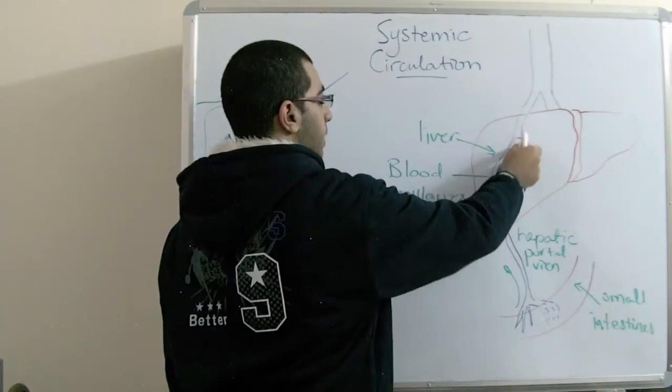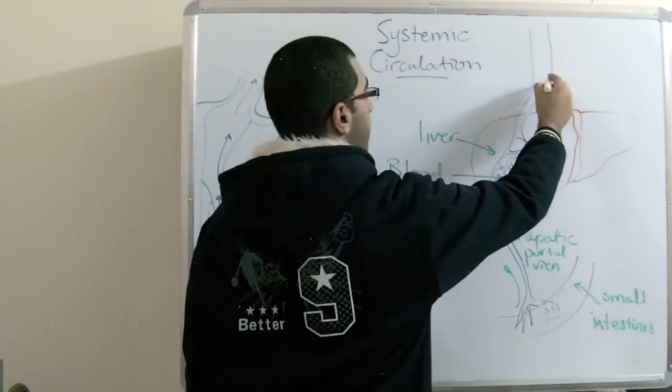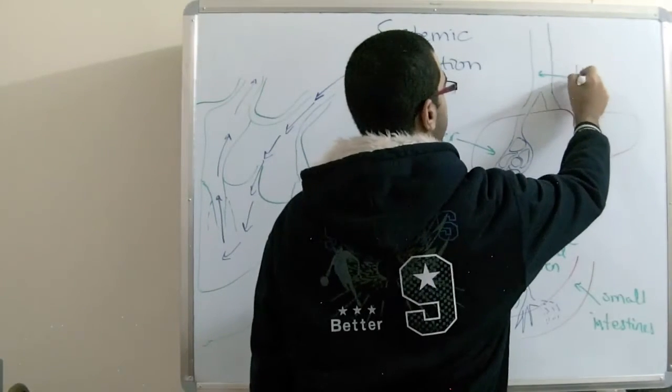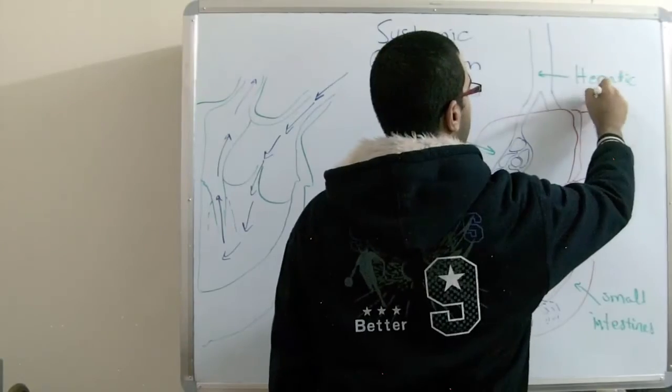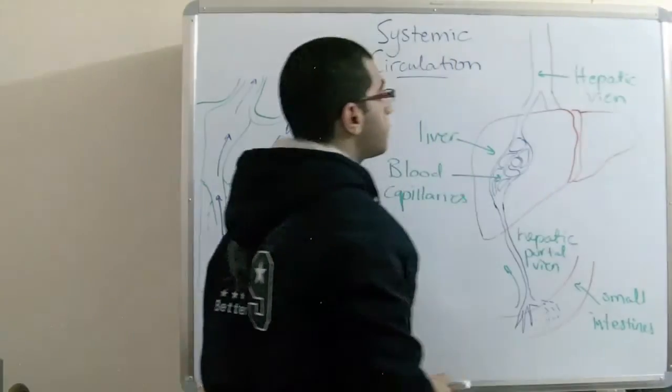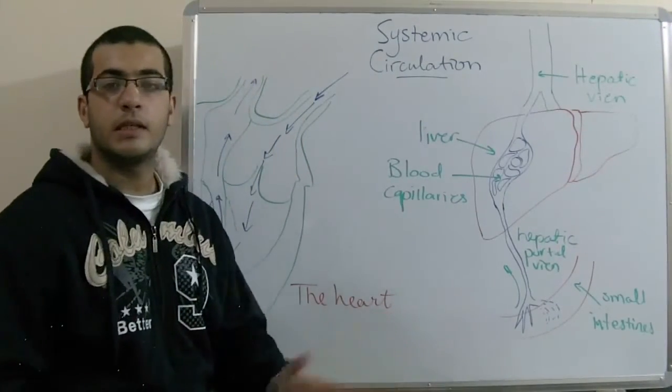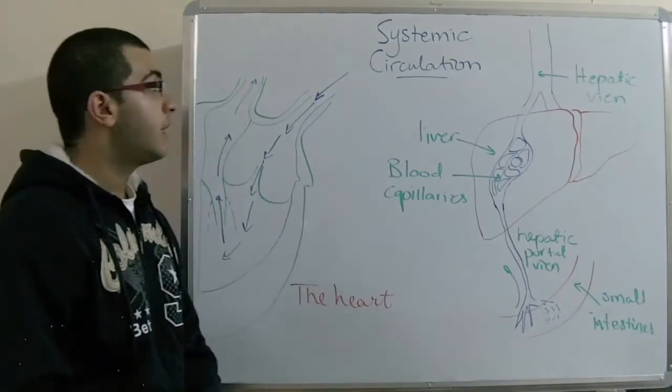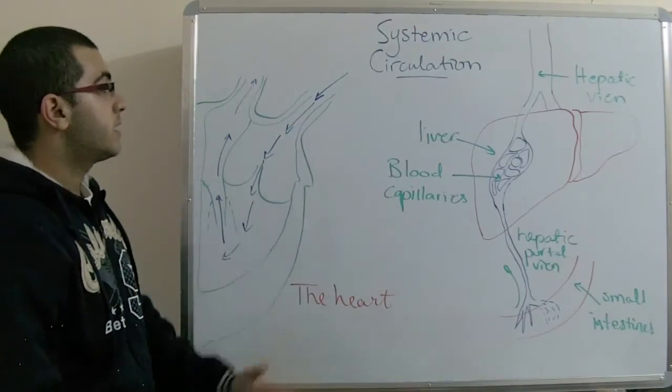And then these blood capillaries aggregate once more to give rise to the hepatic vein. And this hepatic vein moves in order to pour its contents inside the inferior vena cava, and then to the heart. And this is it for the systemic circulation.